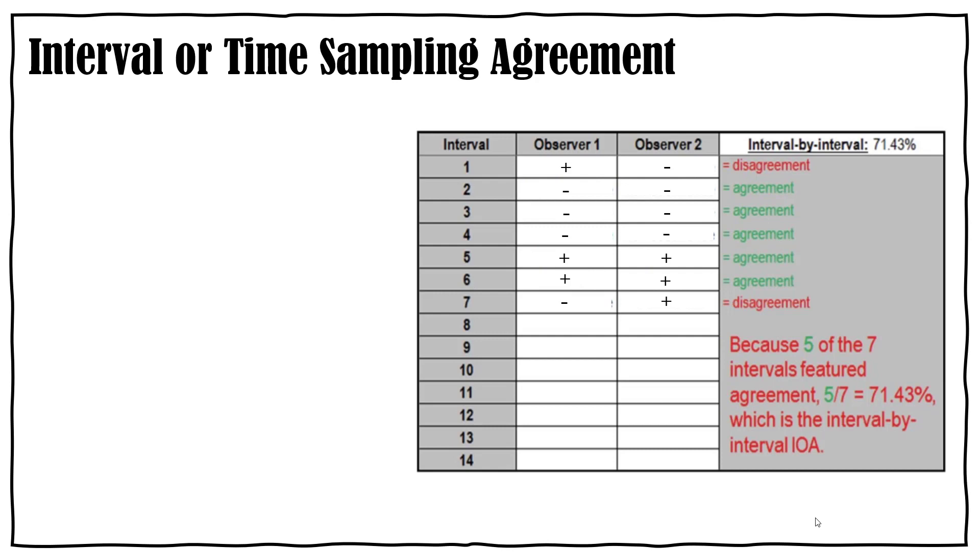The next type of agreement you would use with your interval or time sampling. And so basically you're going to go through your intervals. Remember, say we have partial interval recording and you're going to have two observers. If the behavior occurred at any time during the interval you get a plus, if it didn't you get a minus. So you can go through and look at your partial interval recording for observer one and observer two, and then you want to compare those intervals and see if you agreed that the behavior occurred or didn't occur.